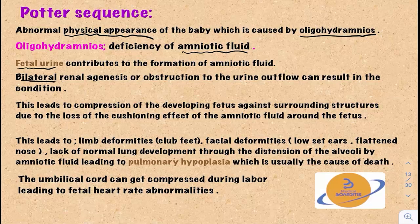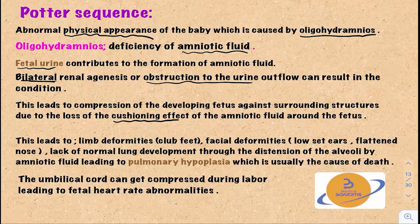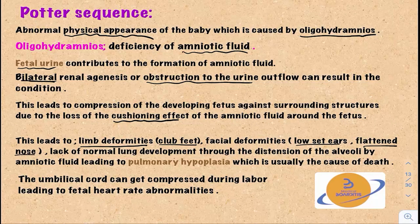Bilateral renal agenesis or obstruction of the urine outflow can result in oligohydramnios. This will lead to compression of the baby against surrounding structures due to the loss of the cushioning effect of the amniotic fluid around the fetus. This can lead to limb deformities like club feet and facial deformities like low-set ears and flattened nose, as well as lack of normal lung development through distension of the alveoli by the amniotic fluid, leading to pulmonary hypoplasia.